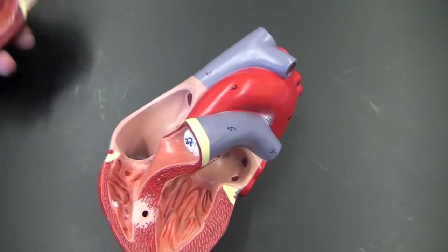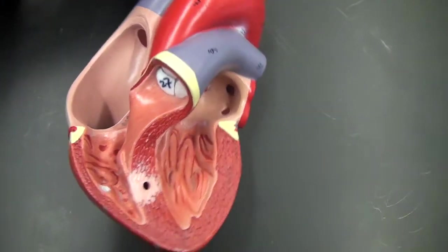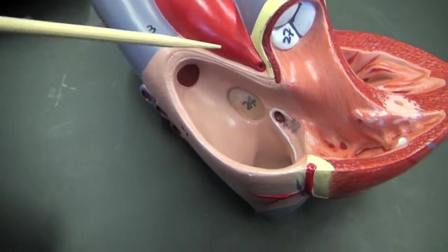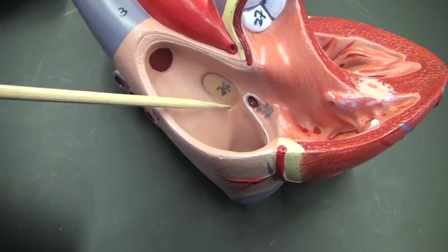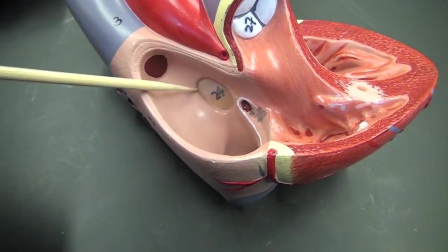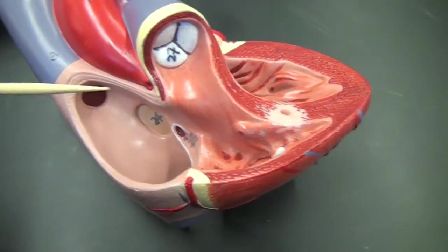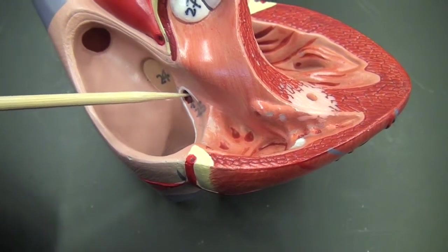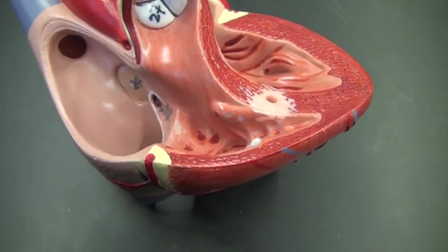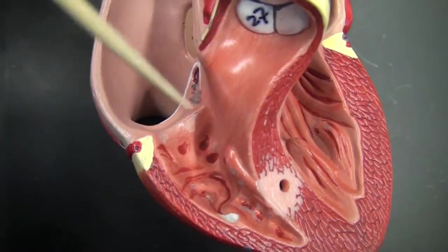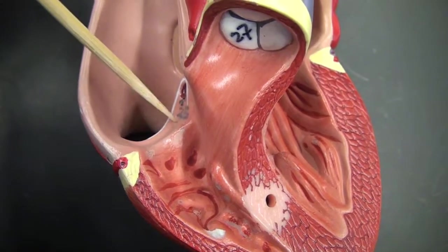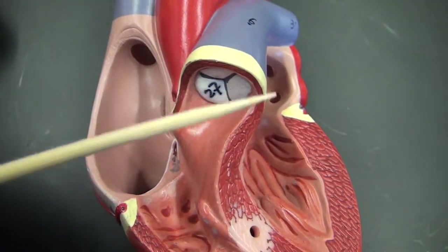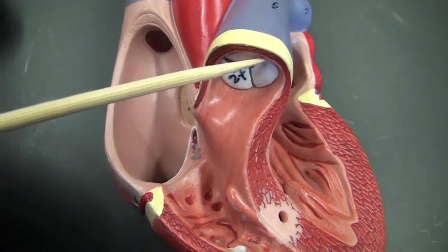When you open up the heart in the right atrium, here's the fossa ovalis, and below it is the opening of the coronary sinus into the right atrium. The valve that separates the atrium and ventricle is the tricuspid valve or the right AV valve. Pulmonary valve.